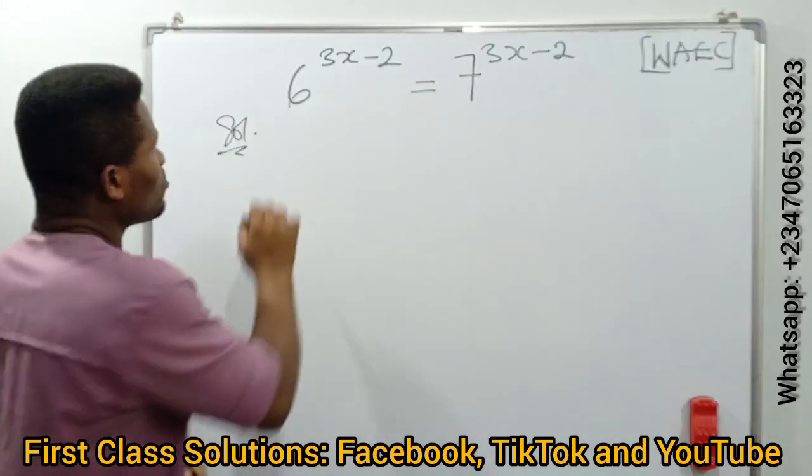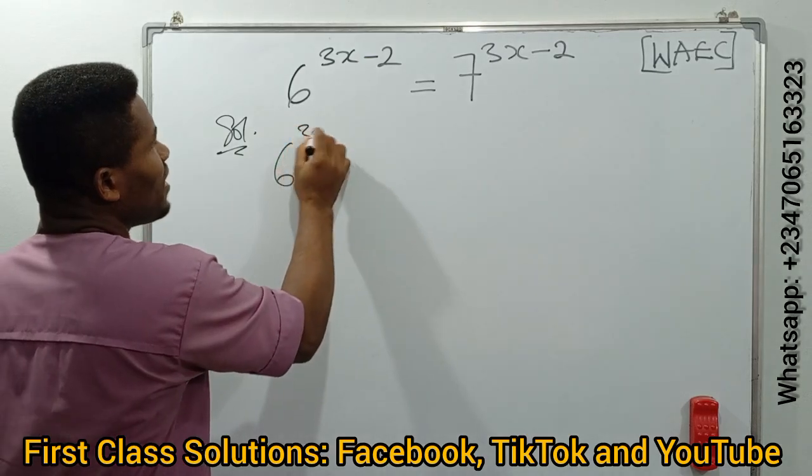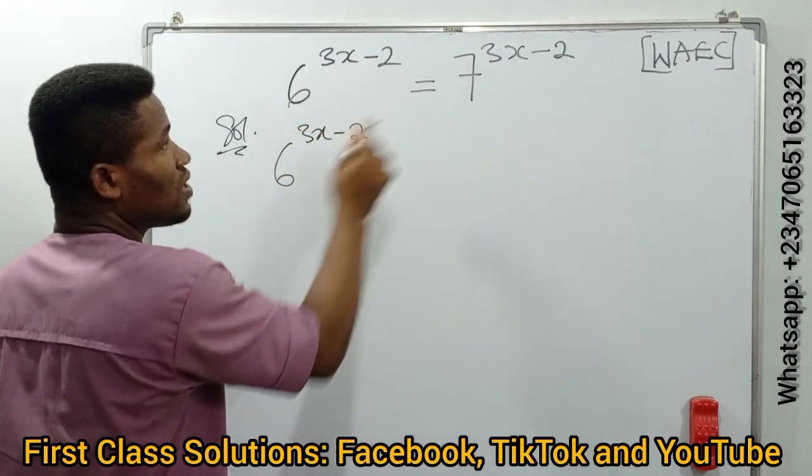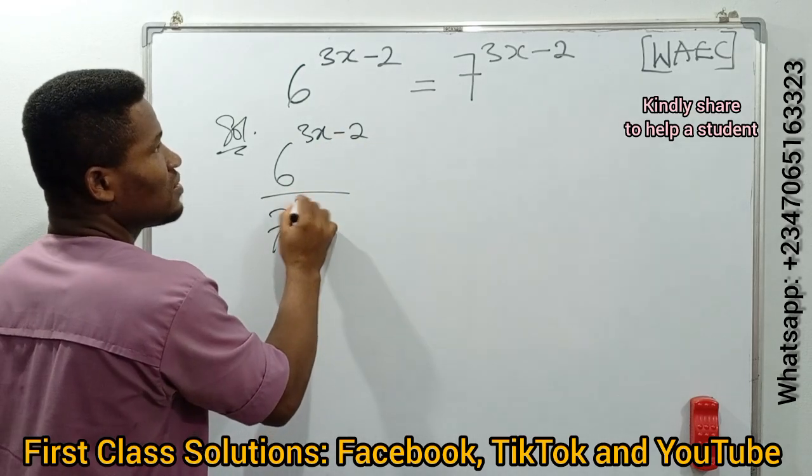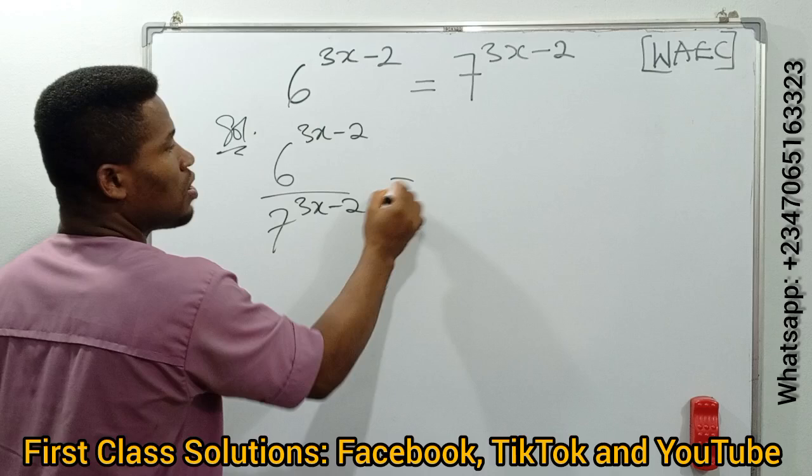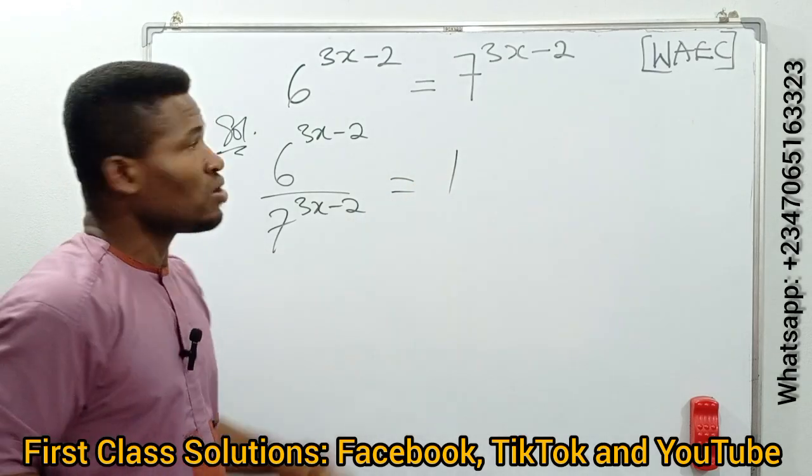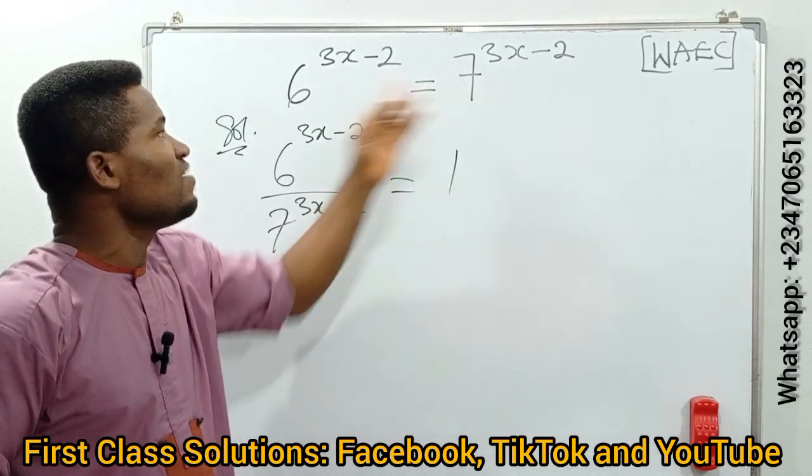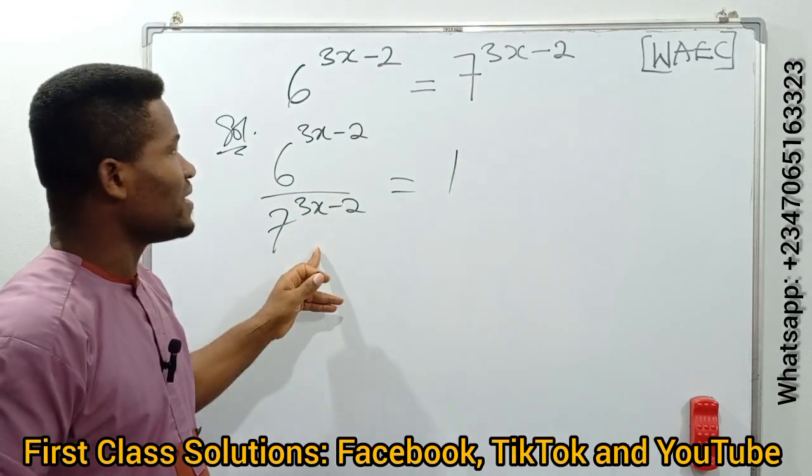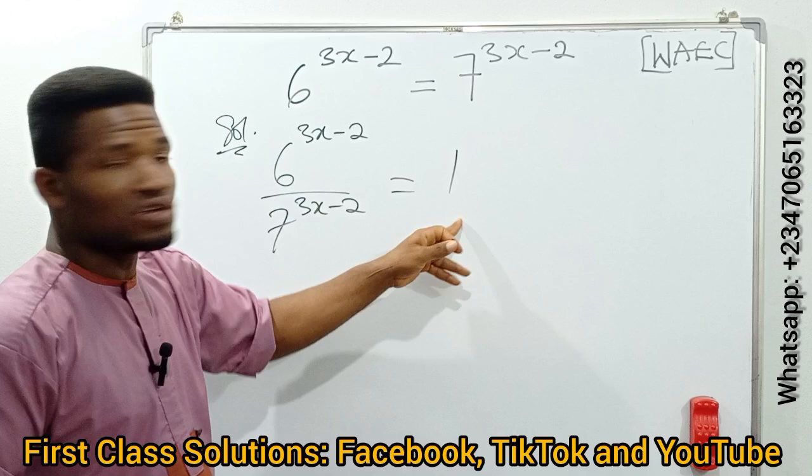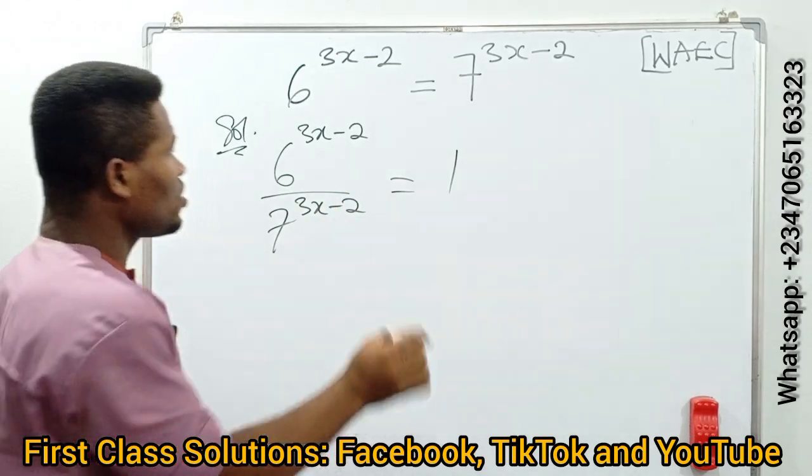The first thing is to look at 6^(3x-2) equal to this. It can be written as this over 7^(3x-2), all equal to 1, because it's the same as dividing both sides by 7^(3x-2). If this divides by this and this divides itself, here will give you 1 and this will give you this.